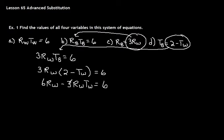And we're going to get 6RW minus 3RW times TW equals 6. This works out perfectly. Do you see how we have RWTW right here? We can replace the RWTW by 6, since RWTW equals 6.